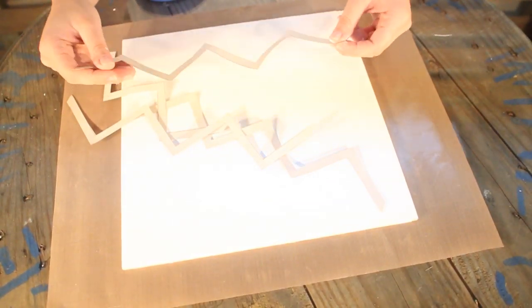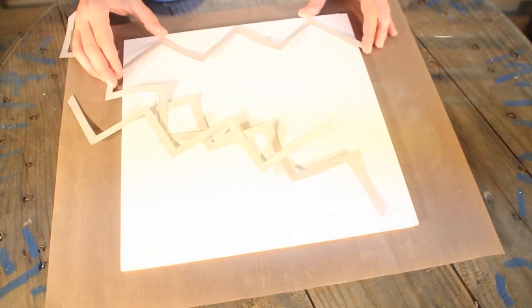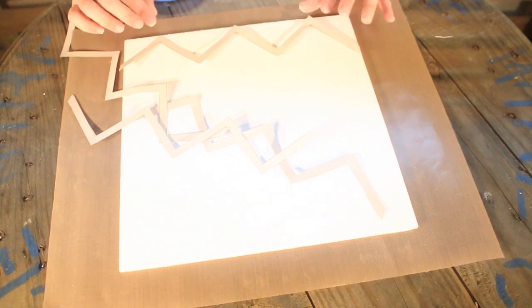Take one of your chevron strips and place it down on your surface. The first one is going to go all the way to the bottom of your board.